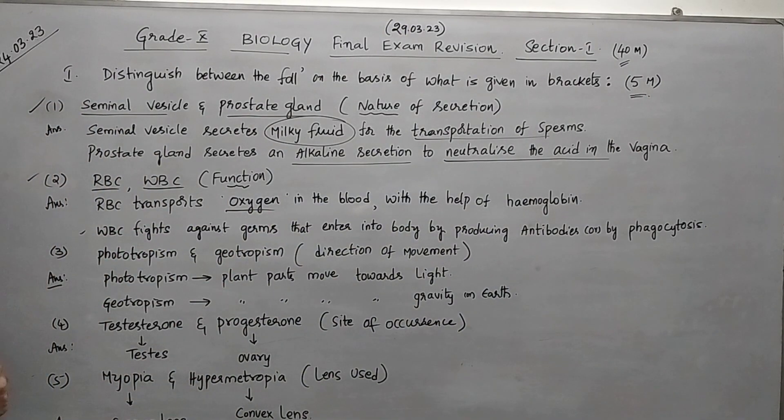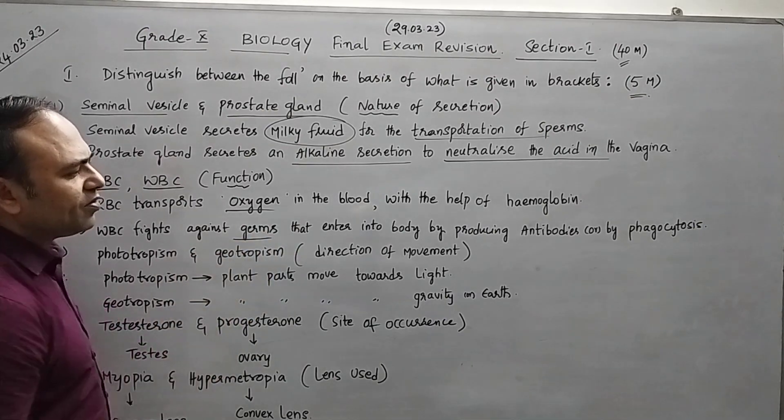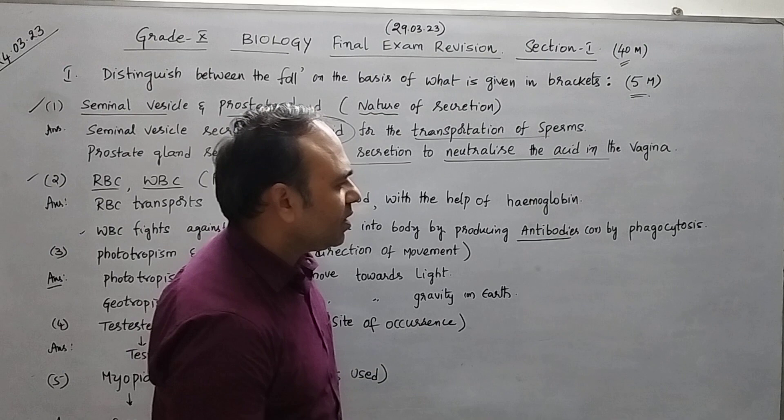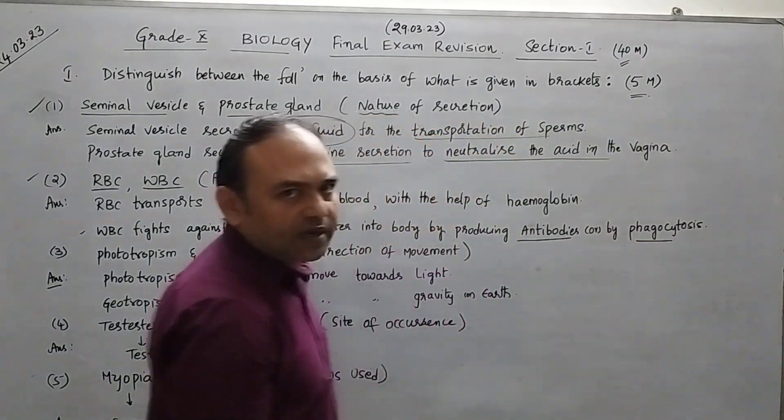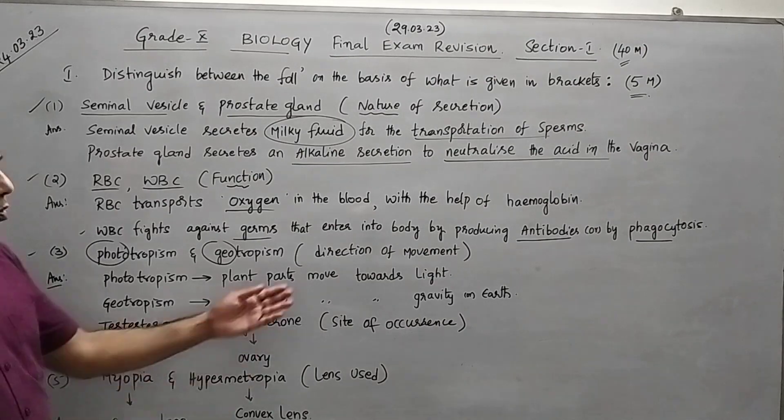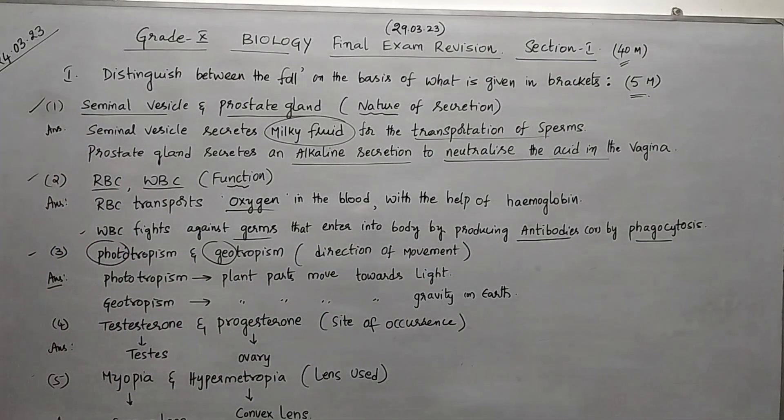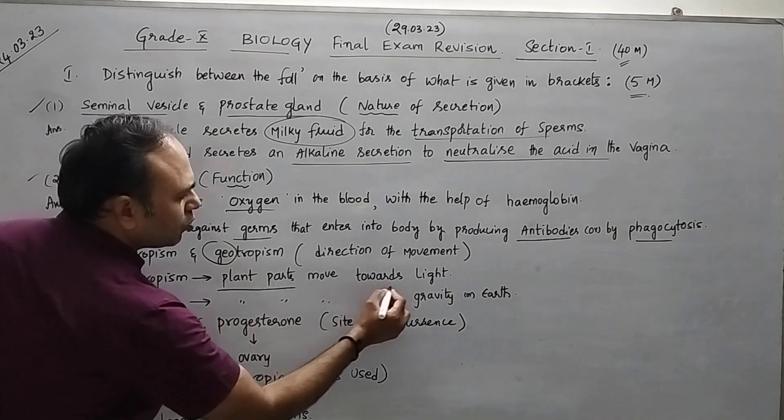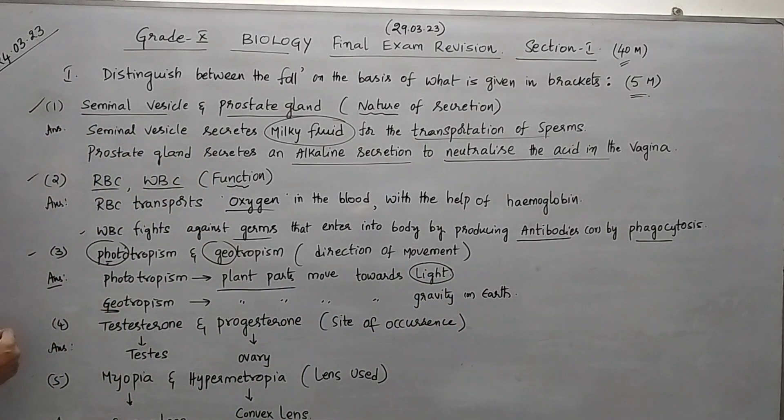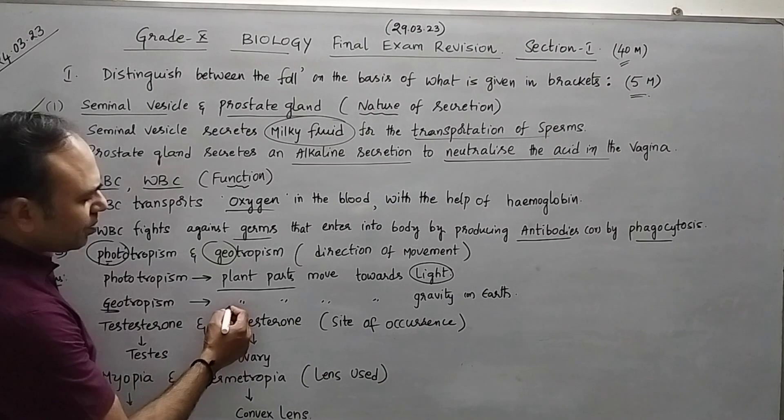WBC will fight against germs. How will it fight against the germs? Either by producing antibodies or by phagocytosis. So we know all these terms. Write the keywords. Third one, phototropism and geotropism - what is the direction of movement?